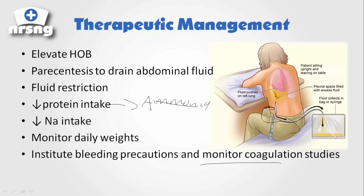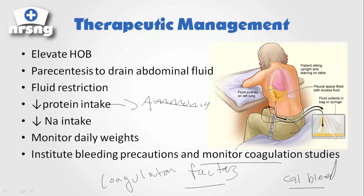Remember, one thing that the liver does is help create coagulation factors. Once our liver is no longer producing those, our patient becomes a huge bleeding risk. Also because of these esophageal varices and this portal hypertension, they're even more of a bleeding risk. These liver patients in advanced liver failure are going to be bleeding from almost every orifice. They'll often develop a GI bleed that can be really difficult to manage when blood is just coming out of their rectum and they cannot stop it — it's just a lower GI bleed.